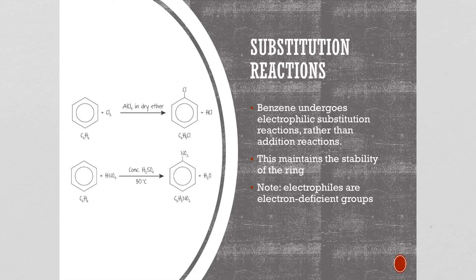Benzene undergoes substitution reactions rather than addition reactions. This maintains the stability of the ring. If you underwent addition reactions you would be breaking the double bonds. Note this happens as an electrophilic substitution. Electrophiles are electron deficient groups and we'll look further in detail at this later on.